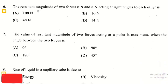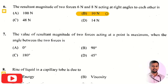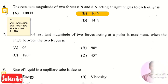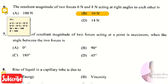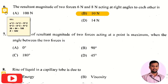The next question: the resultant magnitude of two forces 6 N and 8 N acting at right angles to each other. The right answer is 10 N. Since the forces act at right angles, we use A² + B² = R². So 6² + 8² = 36 + 64 = 100 = R². Taking the square root gives R = 10 N.